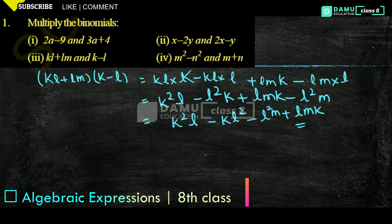Our next one is: (m² - n²) into (m + n).